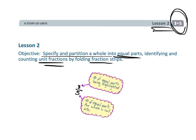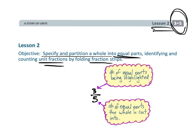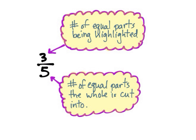First, we want to remember what a fraction is. When you have a fraction, your denominator identifies the number of equal parts that the whole has been cut into, and the numerator is the number of equal parts that are being highlighted — maybe being eaten, or it's the number of pieces left over. For this lesson, though, we're only going to be talking about unit fractions, so that numerator is going to be 1 the whole lesson.